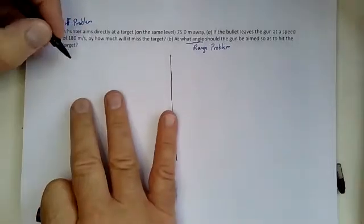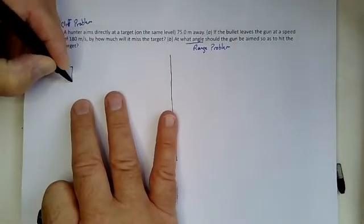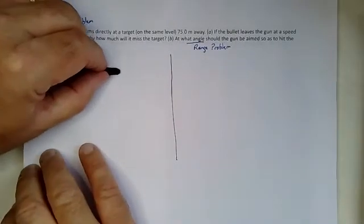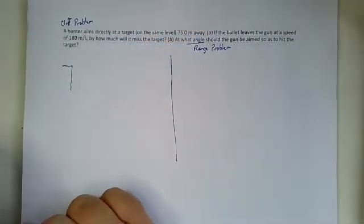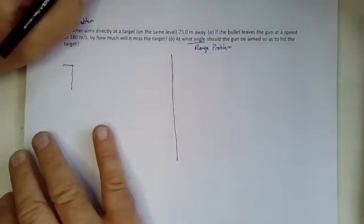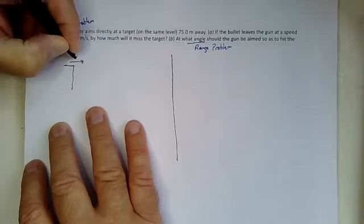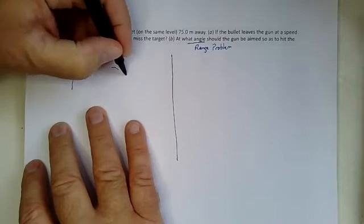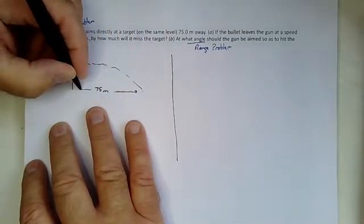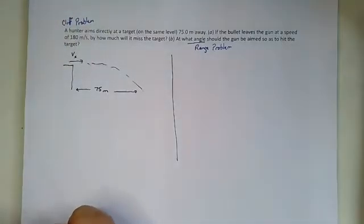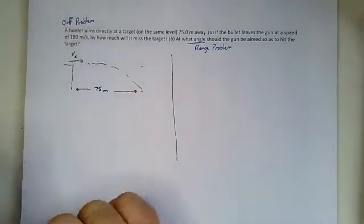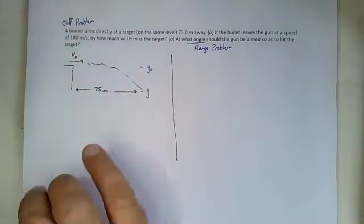So the scenario in the cliff problem looks like this - our object, a bullet, is going to be fired, but under the influence of gravity, it's going to be made to fall. So let's start off by listing what we have for variables to work with. We've modified our variables a little bit. So here's our initial velocity in the x direction.